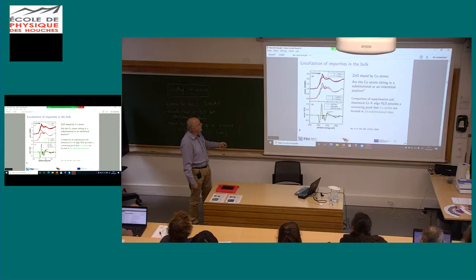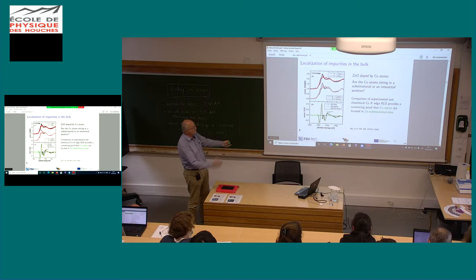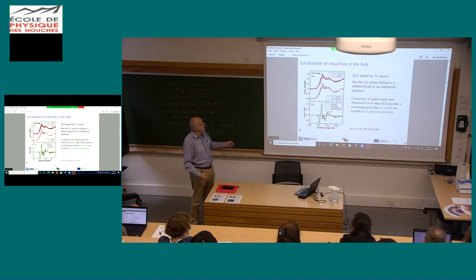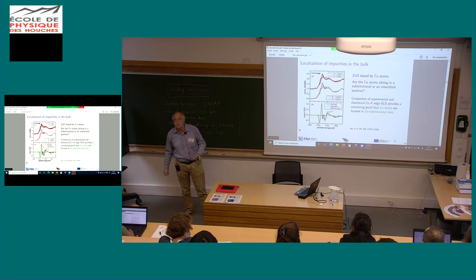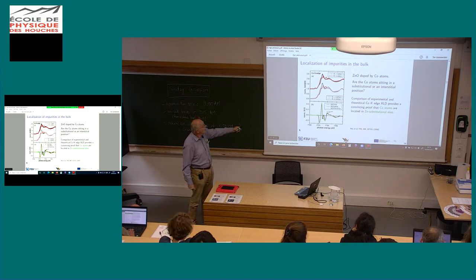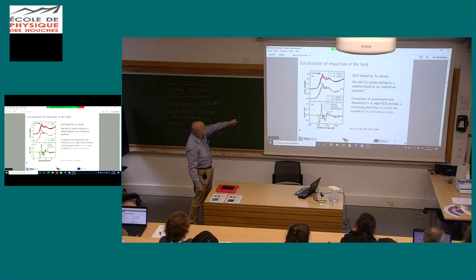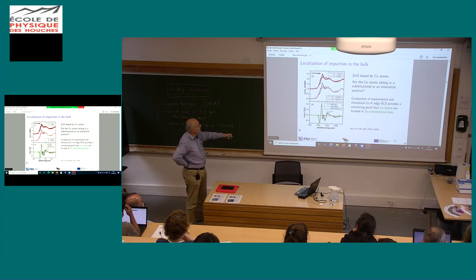Another instructive example is zinc oxide doped by cobalt. The question was whether the cobalt atom sits in an interstitial position or a substitutional position — either oxygen-substitutional or zinc-substitutional. You measure the polarized spectrum, simulate it, and measure the dichroism — the difference between the two spectra. You get very good agreement between theory and experiment, so you can be quite sure that cobalt atoms are sitting in zinc-substitutional sites.